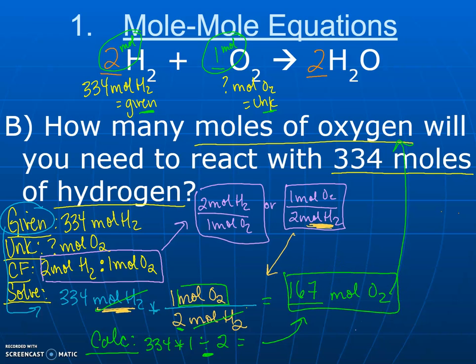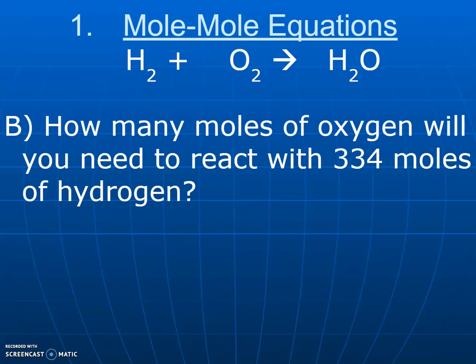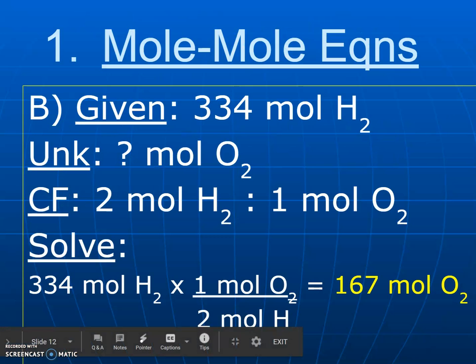In essence, what are you doing? It's a two-to-one ratio. You are going to halve it. 334 divided by two gives you 167, and you are halving your amount. It's like following a recipe.